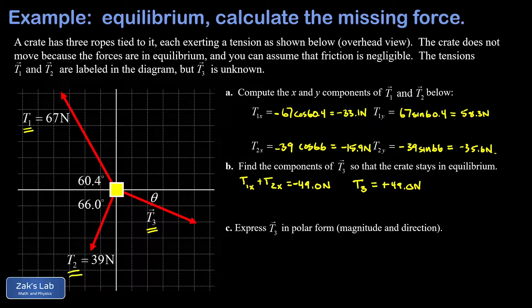We do the same thing in the y direction, and when I add those first two y components I get 22.7 newtons total. That's an upward net y component, and that means the y component of t3 is going to be the opposite of that, or negative 22.7 newtons.